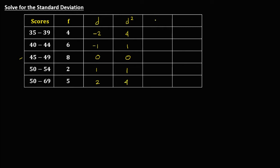For the next column, solve for the product of F and D by multiplying those two columns. So we have 4 times negative 2, that's negative 8. Then 6 times negative 1, that's negative 6. 8 times 0 is 0. 2 times 1 is 2, and 5 times 2 is 10.